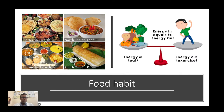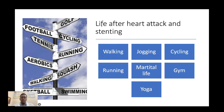Regarding food, a lot of questions come up — what should we take? All Indian foods are good, but the most important thing is balancing your caloric intake. When you take too much oily food it brings a lot of calories, which will be responsible for more cardiac issues in the long term. Avoid it as much as possible — eat less, eat everything. Life after heart attack and stenting: you can do everything — walking, jogging, cycling, running, normal marital life, gym and yoga.